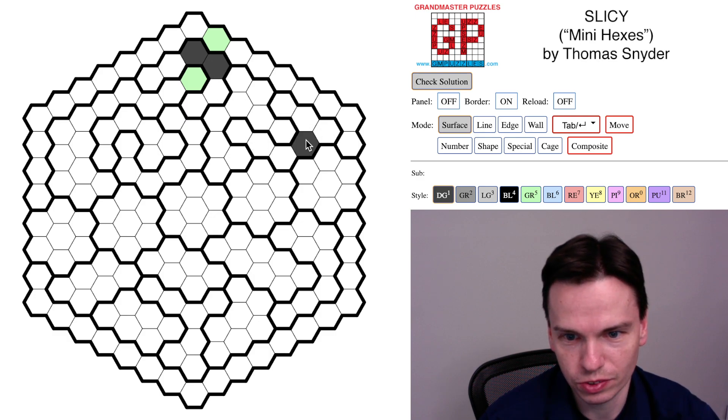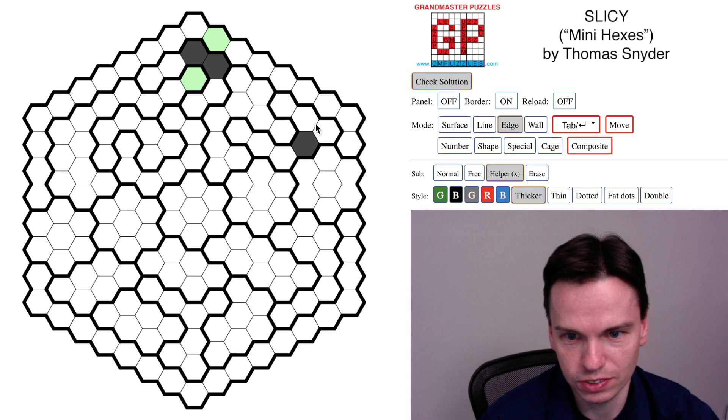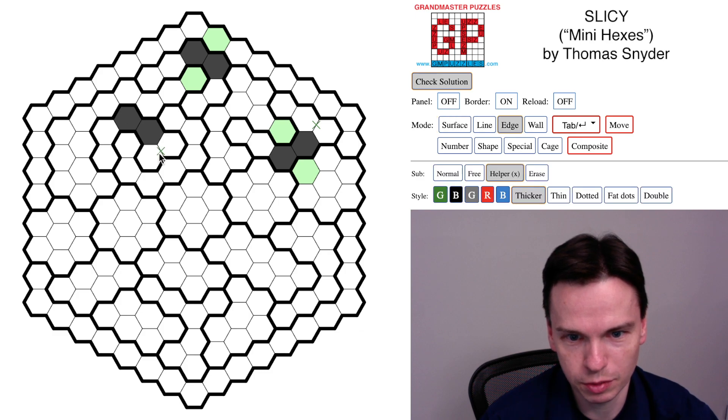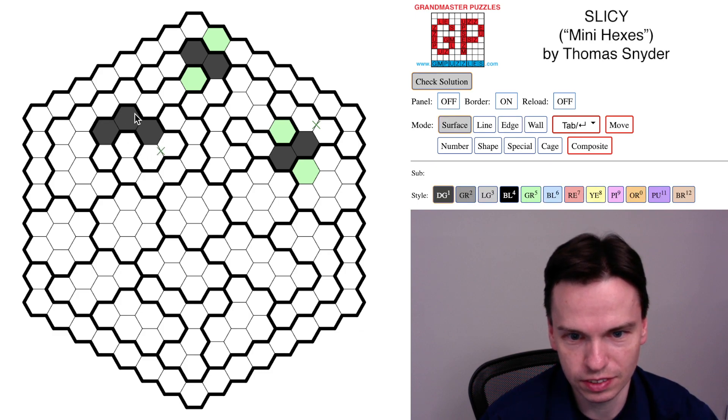This region over here of seven cells always has to shade this, and you'll actually see you can't take both of these cells. Marking that in with this X, we have to come in and take this additional cell. This six-cell region always has to take at least these middle two, but we can't take both of these, so it actually has to take at least these three.